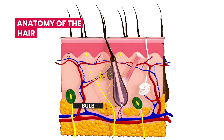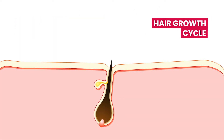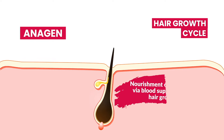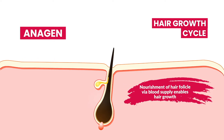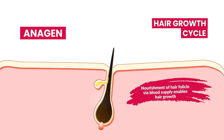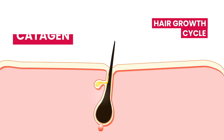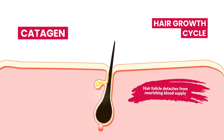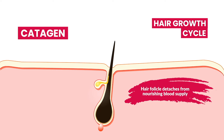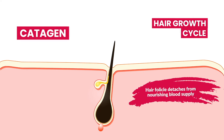The lower region of the bulb is known as the matrix. The different stages of the hair growth cycle are: anagen, where the hair receives nourishment in the form of food and oxygen from the blood supply via the dermal papilla; and catagen, where the dermal papilla separates from the hair, the follicle shrinks by a third, and the dermal cord is formed.